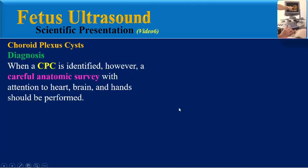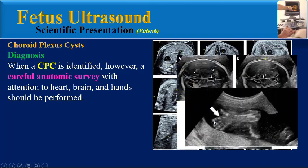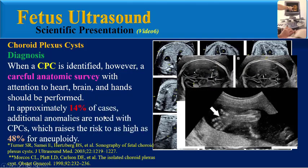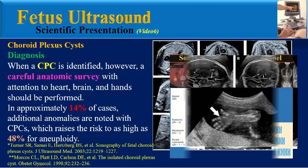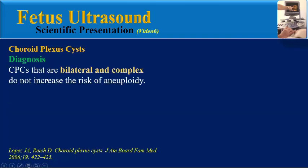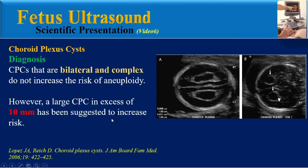When a choroid plexus cyst is identified, a careful anatomic survey with attention to heart, brain, and hands should be performed. According to many studies, in approximately 14% of cases, additional anomalies are noted with choroid plexus cyst, which raises the risk to as high as 48% for aneuploidy. Choroid plexus cysts that are bilateral and complex do not increase the risk of aneuploidy according to some studies. However, a large choroid plexus cyst in excess of 10 mm has been suggested to increase risk.